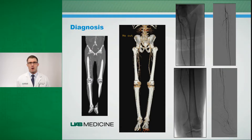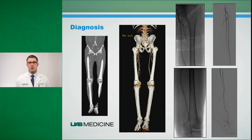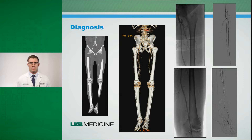More involved studies including CT angiography or an angiogram can give us more specific anatomical detail as to where your disease may be located.